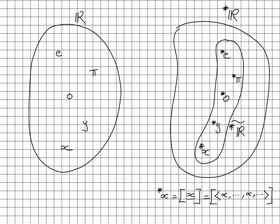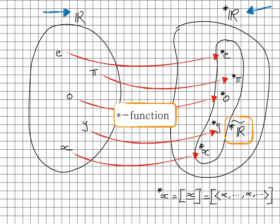To recap: on one side we have the real numbers, and on the other side star-R, which includes special elements written star-x. Those elements define a subset we call star-R-tilde. The star function is an isomorphism from R to this subset. In other words, all star-x elements behave exactly like real numbers, and soon we will stop distinguishing between x and star-x because they are in essence the same thing — star-x is simply another representation of the real number x.